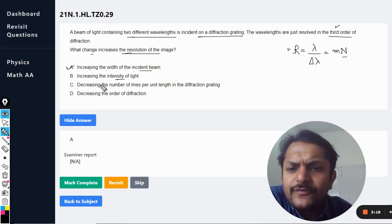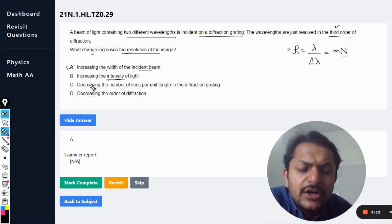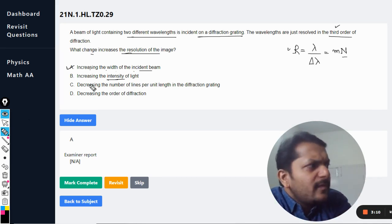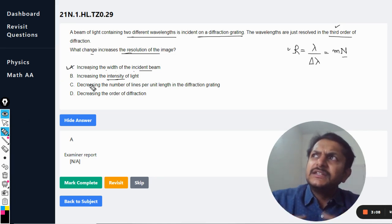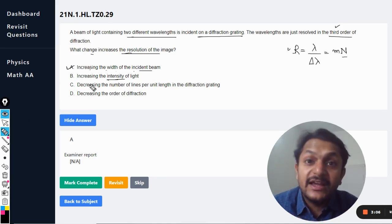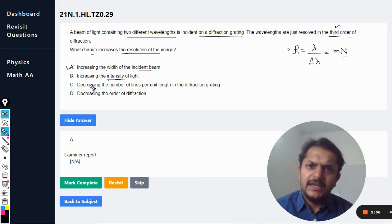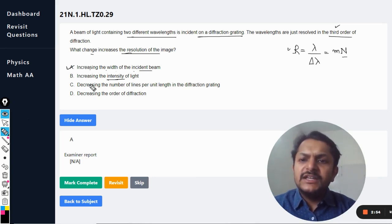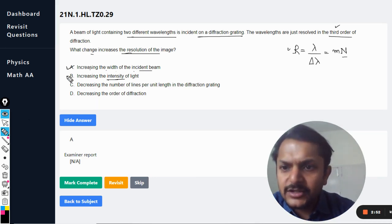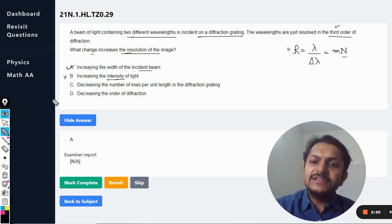Increasing the intensity of the light. So my dear students, intensity has nothing to do with the resolution here, because we have seen in the Rayleigh criteria of resolution that whatever be the intensity, the diagram, the maximums should be different and all that. So it is actually independent of intensity. That is why option B is not correct. Option B is wrong. Decreasing the number of lines per unit length in the diffraction grating.